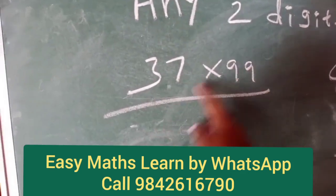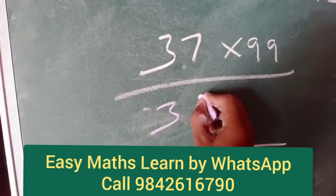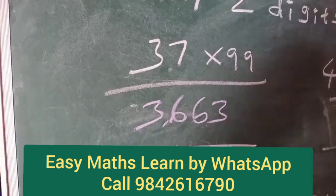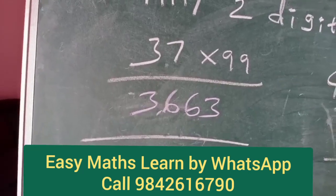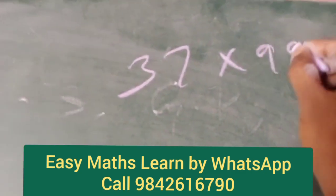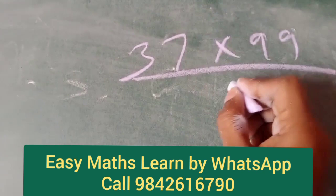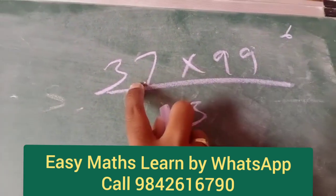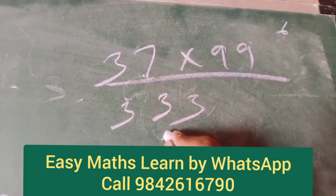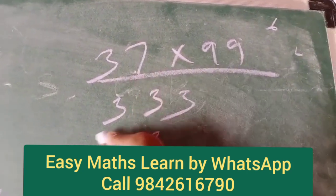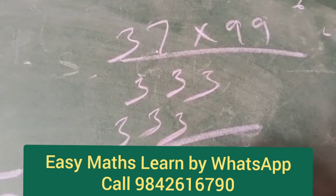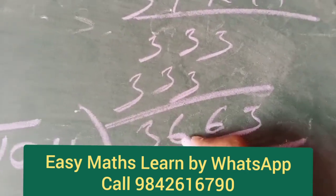36. 37 into 99. One step: 3,663. Okay? 37 into 99 — 97, 63, 6. 93, 27. 27 plus 6: 33. 97, 63, 66. And again: 3,663.